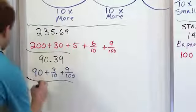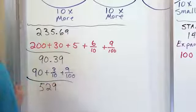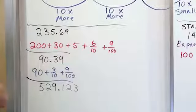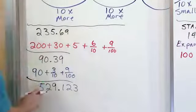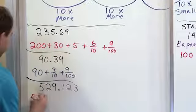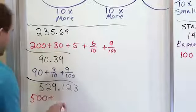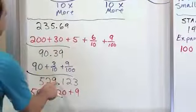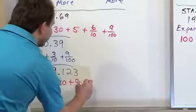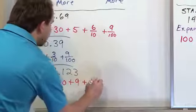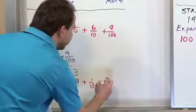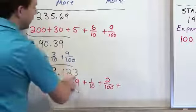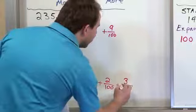Let's get a little additional practice. We have 529.123. How would we write this in expanded form? The five is in the hundreds place, so it's worth 500. The two is in the tens place, so that's worth 20. The nine is in the ones place, so that's worth nine. Then we move after the decimal — the one is in the tenths place, so it's one-tenth. The two is in the hundredths place, so it's two one-hundredths. The three is in the thousandths place, so it's three one-thousandths.